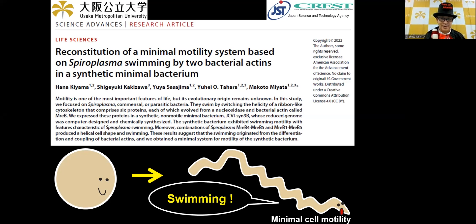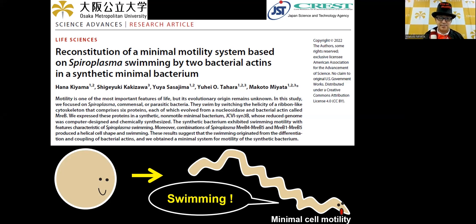Good day everybody. I'm now introducing our recent study, which will be published in Science Advances. The title of our study is 'Reconstitution of a Minimal Motility System Based on Spiral Plasma Swimming by Two Bacterial Actins in a Synthetic Minimal Bacterium.' I'm Makoto Miyata from Osaka Metropolitan University. Thank you for coming to our video.